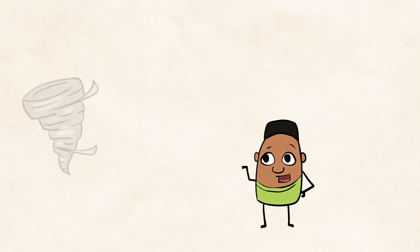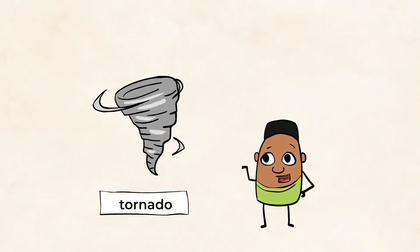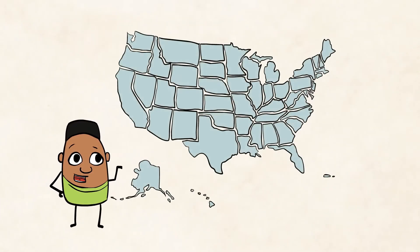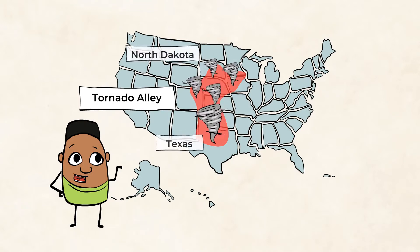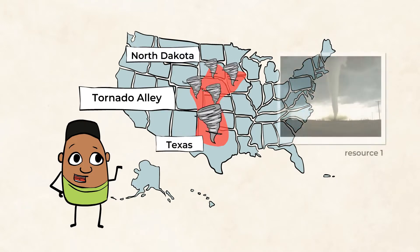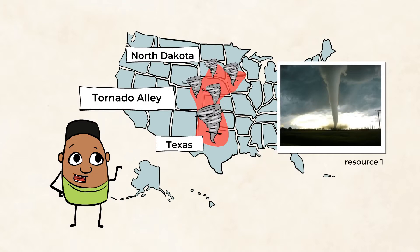One example of extreme weather is tornadoes. A region in the central part of the United States, Tornado Alley, experiences a large amount of tornadoes. You've probably seen a picture or a video of a tornado. It looks like a funnel of wind.